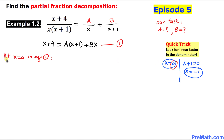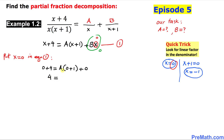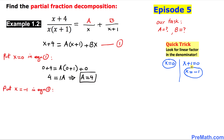Let's focus on x equal to zero. We substitute x equal to zero into Equation 1. On the left hand side it becomes zero plus 4. On the right hand side, a times zero plus 1 plus zero times b, so the b term becomes zero. This gives us 4 equals 1 times a, so a turns out to be 4.